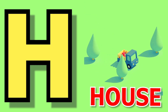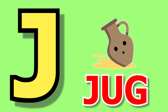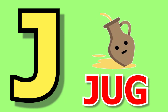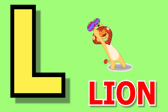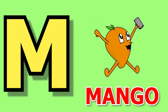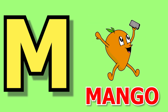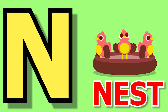G for grapes, H for house, I for ice cream, J for jug, K for kite, L for lion, M for mango, N for nest.